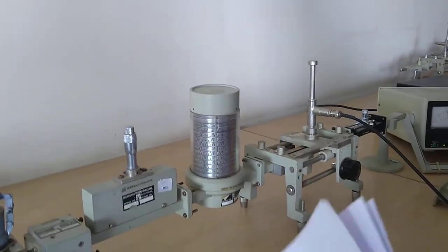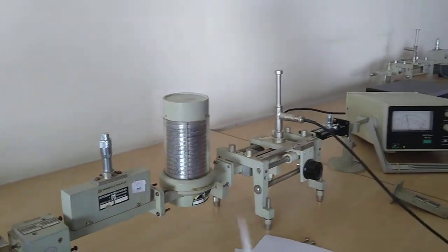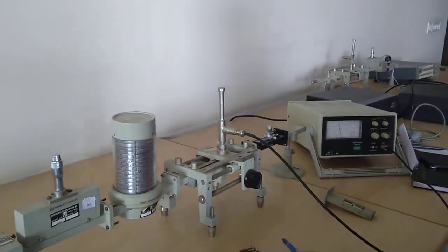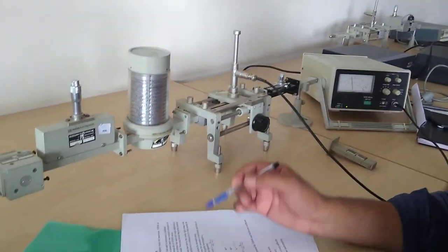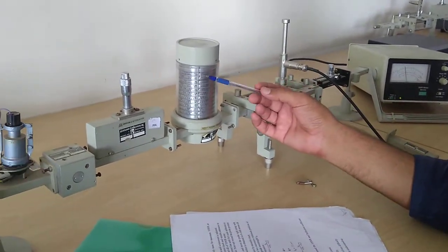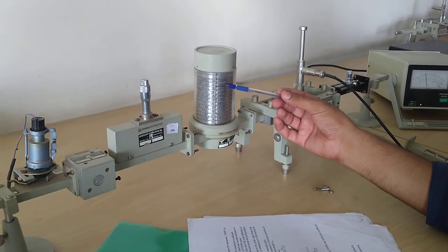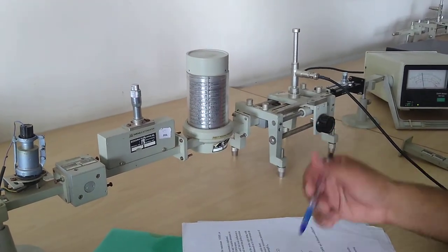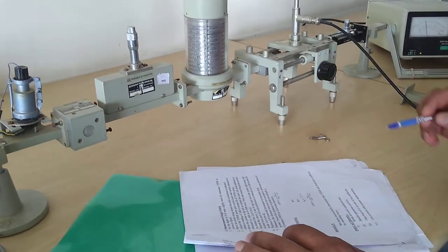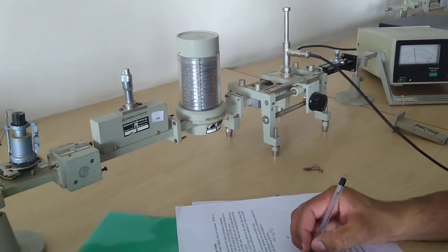From the frequency meter, f is 10.9 gigahertz, and the wavelength of this guide, lambda g, is 27.52 mm. This is the guide wavelength.